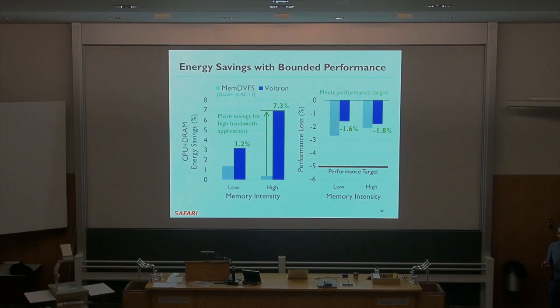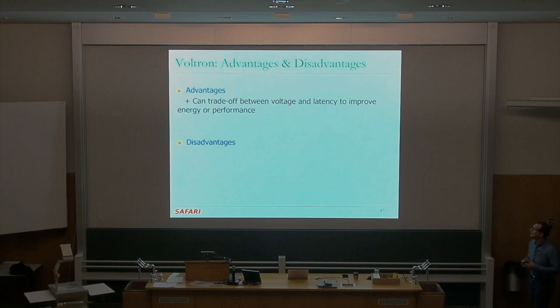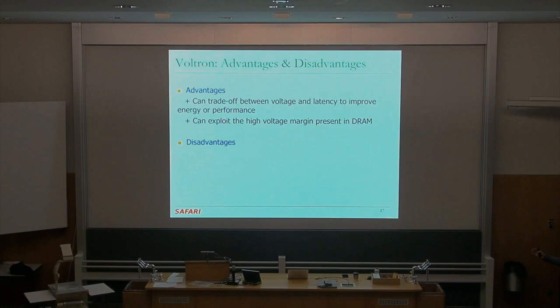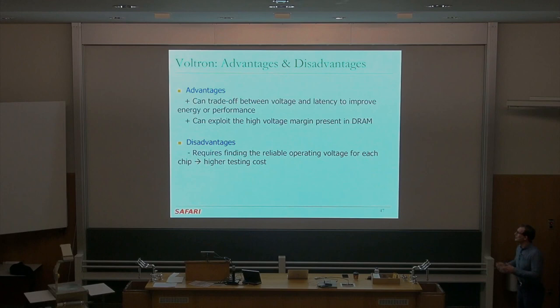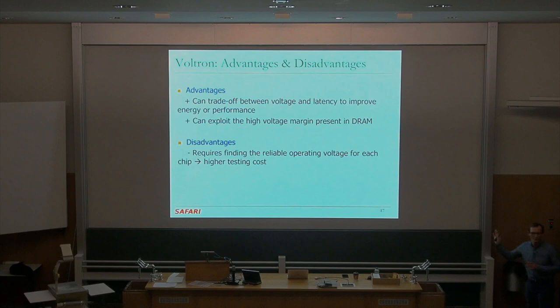Advantages of Voltron: we have a new trade-off — you can trade off between voltage and latency to improve energy and performance while keeping things reliable, exploiting the high voltage margin present in existing products. Processors already exploit that voltage margin with dynamic voltage and frequency scaling, and we need to do it in memory also. Disadvantage: higher testing cost to find the reliable operating latency and voltage for each chip. It's not clear whether the DRAM manufacturer or the memory controller should handle this. If you're interested, you can look at this paper.